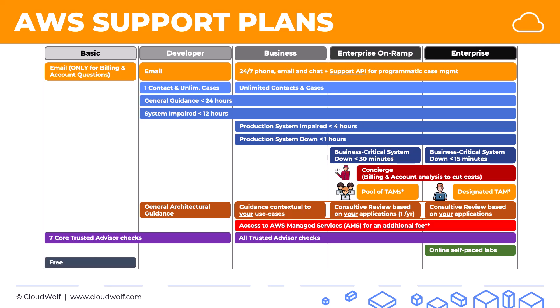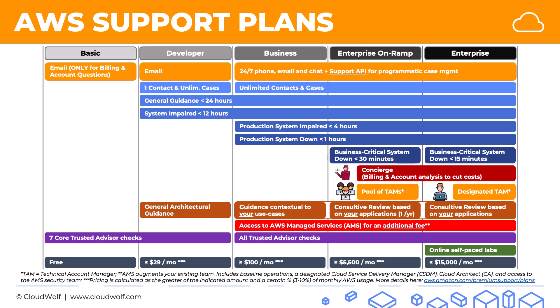Regarding pricing: the basic plan is free. The developer plan is at least $29 a month — meaning the greater of $29 or roughly 10% of your monthly AWS usage. Business starts at a minimum of $100. Enterprise on ramp is $5,500 a month and enterprise is $15,000 a month, or a percentage of your AWS monthly usage ranging between 3% and 10%. Please check the pricing page linked in the footnotes, as these percentages and minimum amounts can change over time.